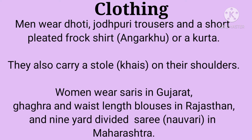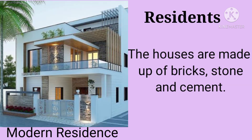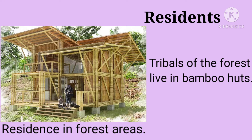Traditional attire includes the angharkho, novari, sarees in Gujarat, and ghagra in Rajasthan. This is the outfit of Rajasthan you can see in the image. Residence: the houses are made up of bricks, stone, and cement. Residents in forest areas live in bamboo huts, as seen with the tribals in the image.